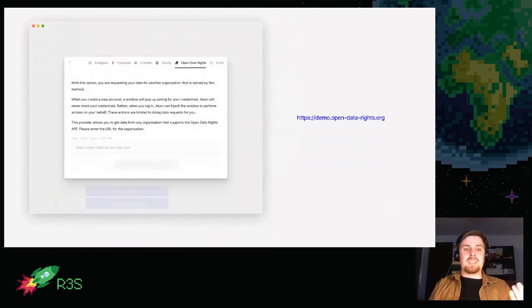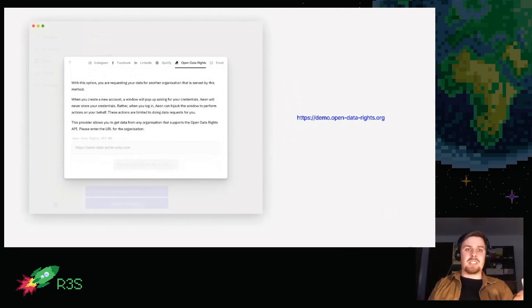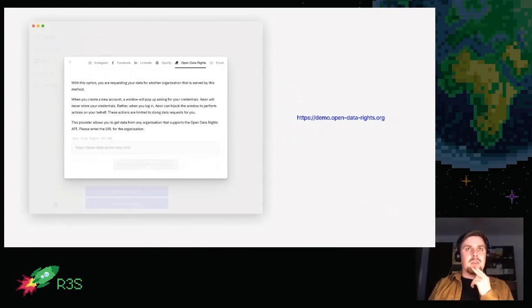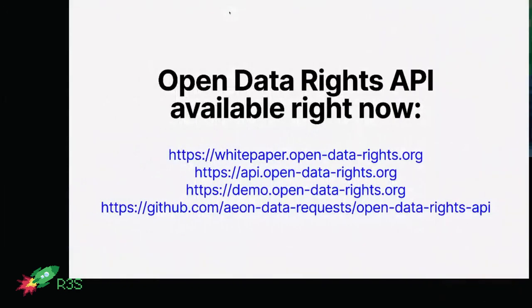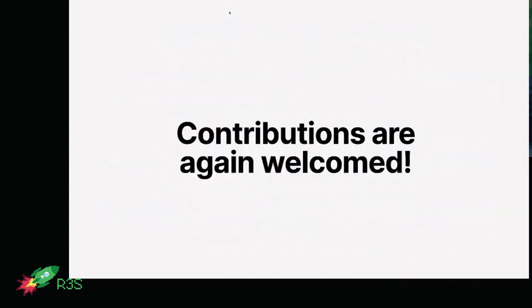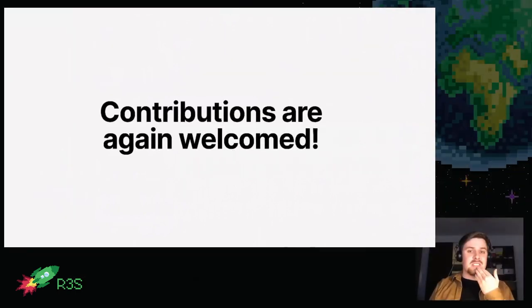A demo implementation of the Open Data Rights API is available at demo.opendatarights.org, and there's also an Eon implementation of it. If you want to take it for a spin, you can plop that URL into Eon and pull in some fake data. All of this is open source and available at whitepaper.opendatarights.org and on GitHub — contributions are welcomed.